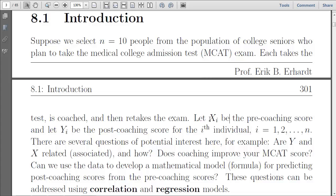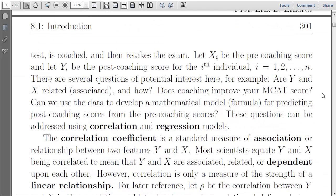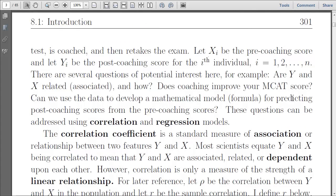And so we want to understand how that increase, or their post-coaching score, depends on where they started. So that's pretty much what those questions are asking. And we can answer those using correlation, which is simply how linearly associated are the x and y scores. And also regression models, which actually will give you an equation to relate how y depends on x through a slope and intercept.